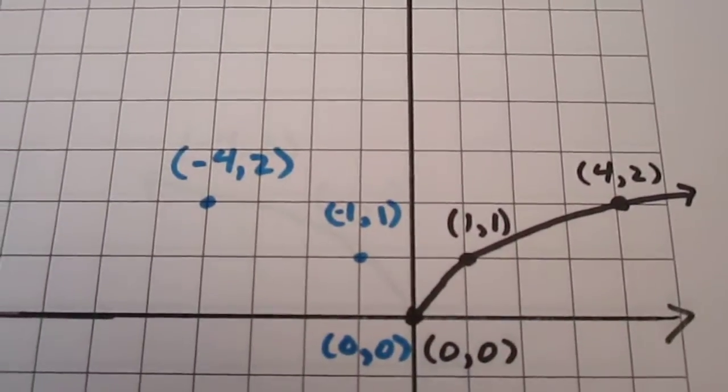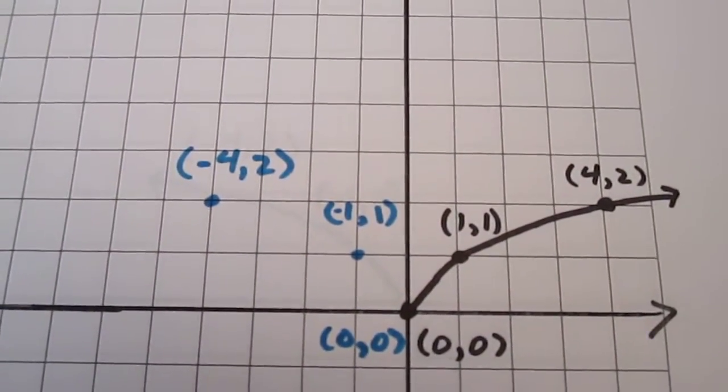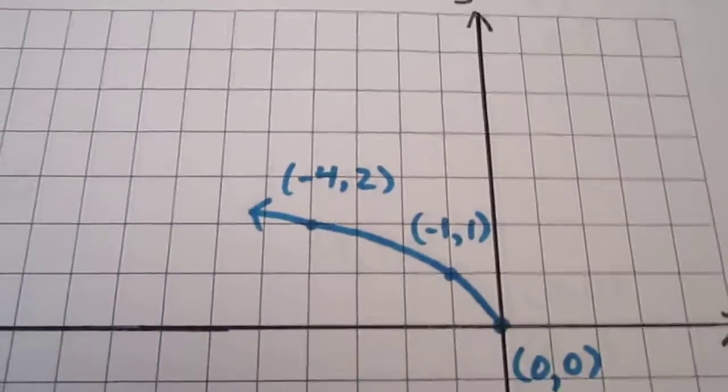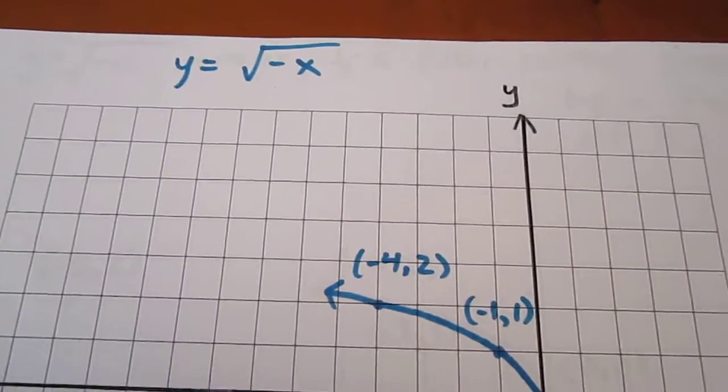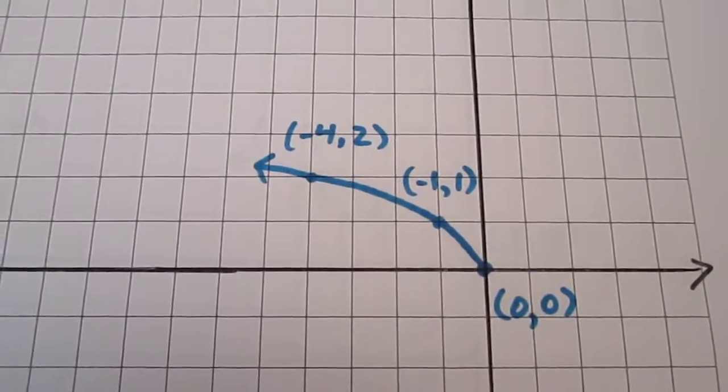A reflection in the y-axis means we leave the y-coordinates the same, but take the negative value of each x-coordinate. So you'll see here that we've done that with each coordinate pair, taking the negative x-value. Now we discard the black curve and focus on the blue. And that is a curve of y equals negative root x.